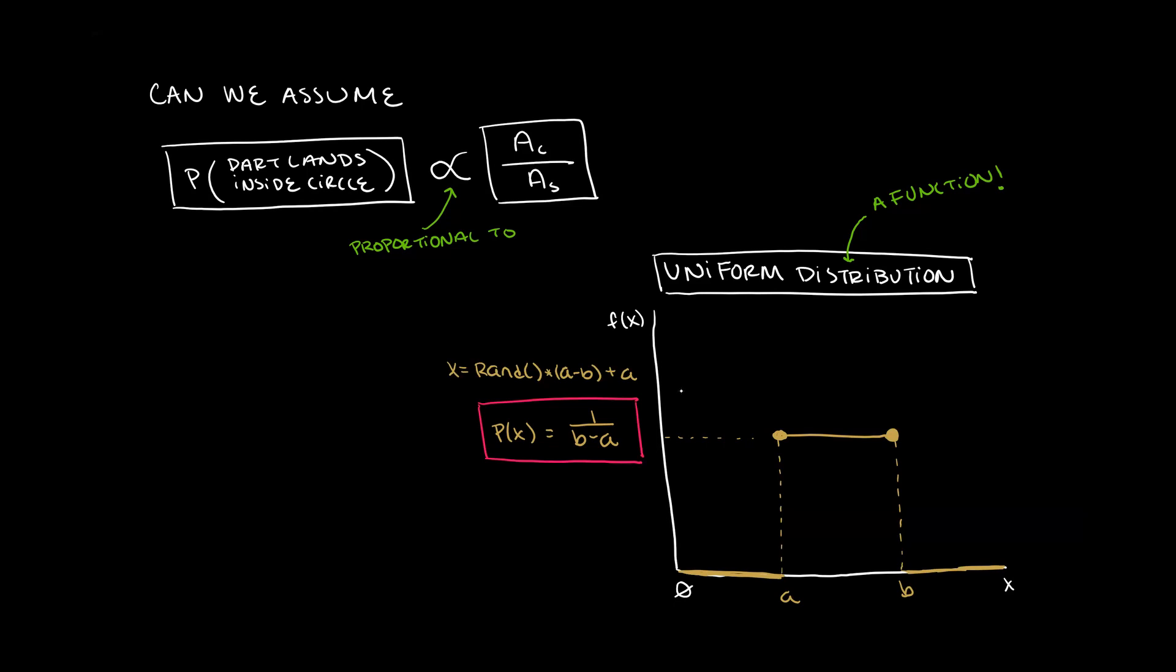So if we choose x equals rand times b minus a, all of that plus a, then the probability of generating that specific x is p of x equals 1 divided by b minus a.